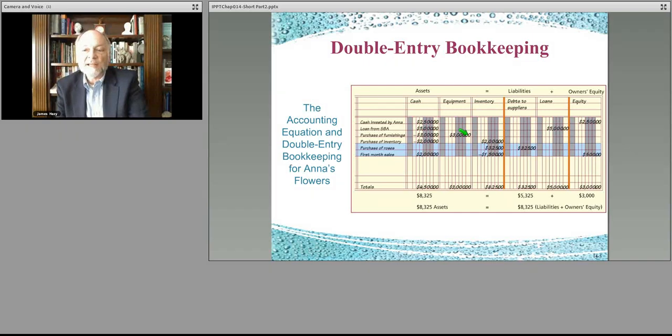They also needed some inventory to get themselves started. That's the $2,000 here where they bought some flowers and vases and things like that. I think this is a flower shop. That $2,000 goes into inventory, and they actually got the roses for inventory.